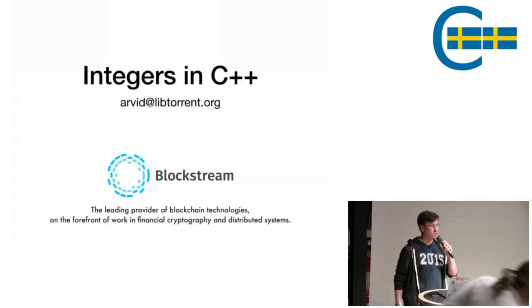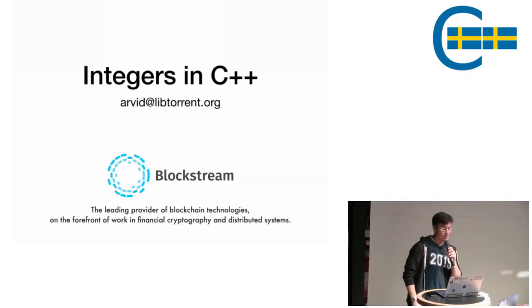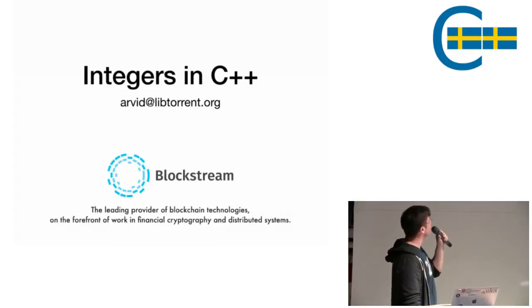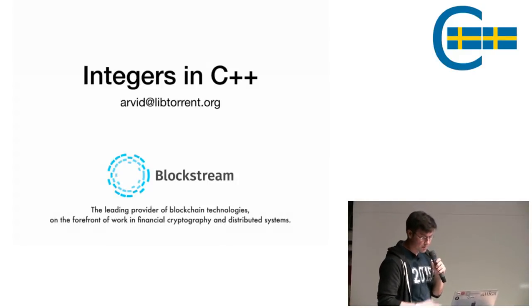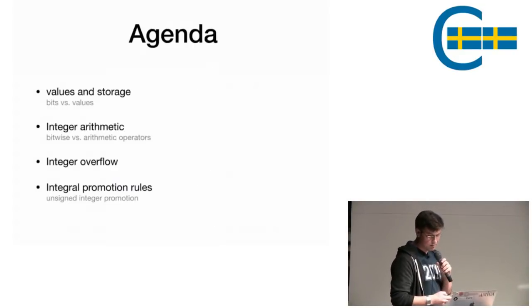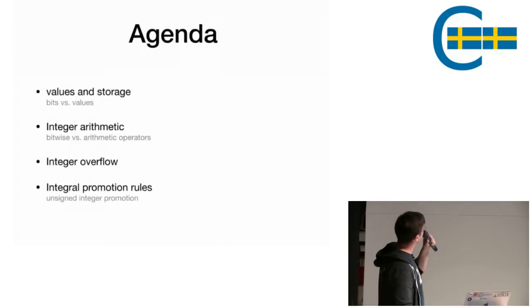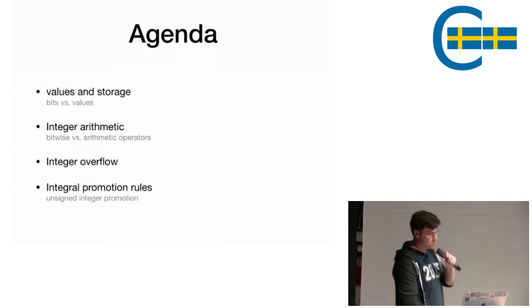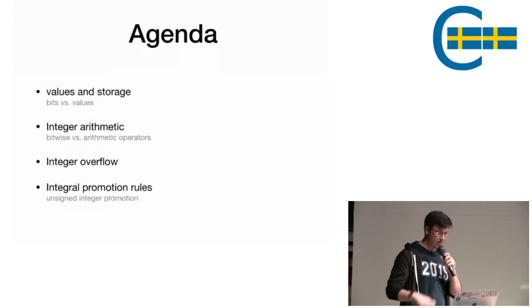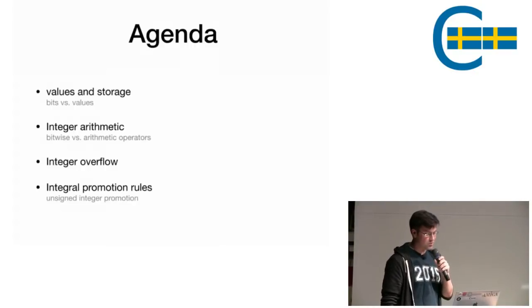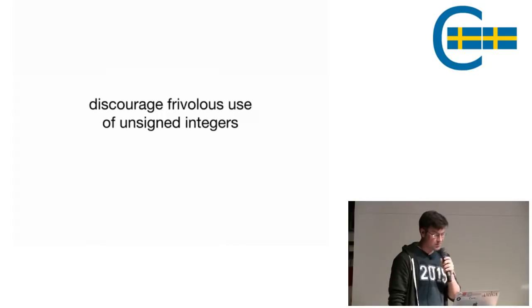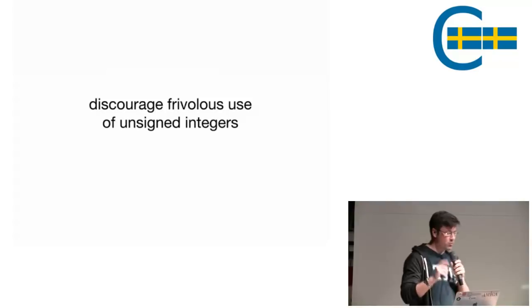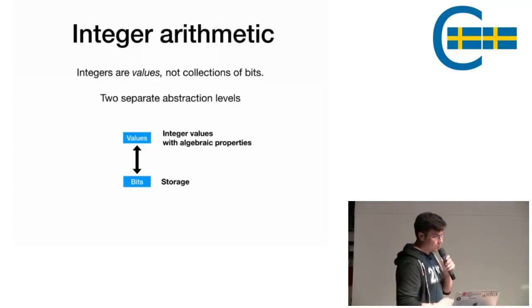All right, my name is Arvid. I work at a company called Blockstream and we are in the blockchain and crypto finance space. I'm here to talk about integers in C++, specifically integer arithmetic. This is roughly what I'm hoping to cover: the distinction between values and storage, the details about various operators in regards to integer arithmetic, integer overflow, and if we have time, some integer promotion rules. Just to avoid confusion, this is my real agenda. If you remember one thing from this talk, I would like you to remember: be careful when you use unsigned integers and have a good reason to do so.